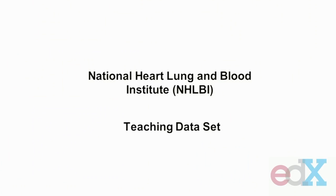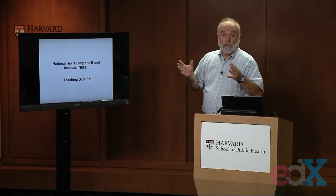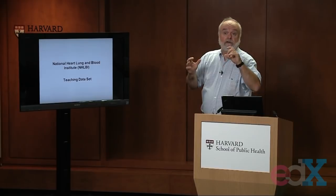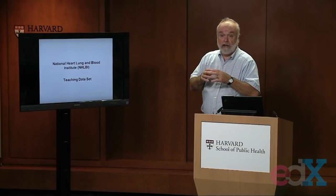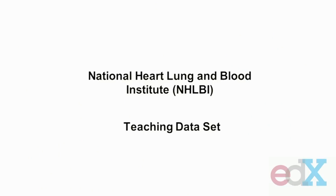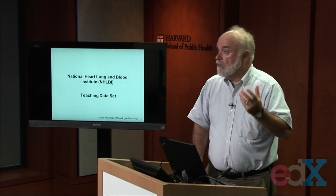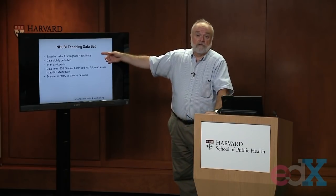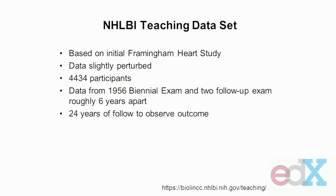For this course, we're going to be using data furnished by the National Heart, Lung, and Blood Institute, based on the Framingham Heart Study. It's going to be available to you to use in your exercises, and we'll be using it in our lectures. A colleague will be telling you about the data set in more detail and how to access it for your homework exercises. You can get access to two teaching data sets; one of those is based on the Framingham Heart Study and we're going to be using that in this course. That particular data set is based on the original Framingham data, but it has been perturbed — slightly changed — to protect the identity of the original cohort.